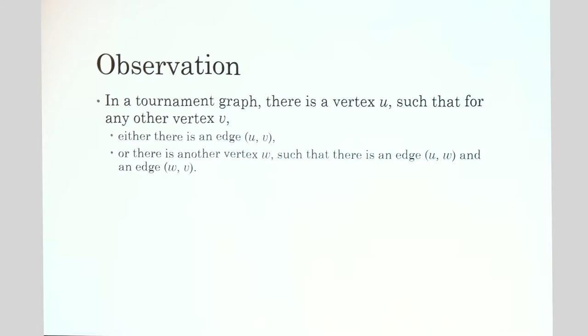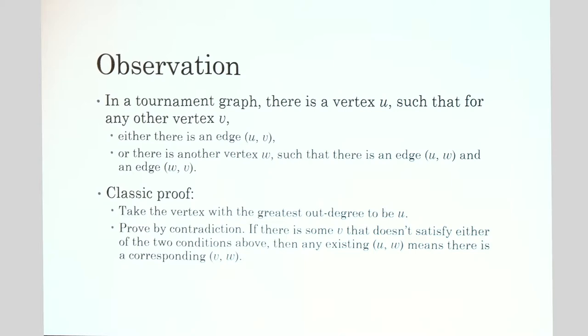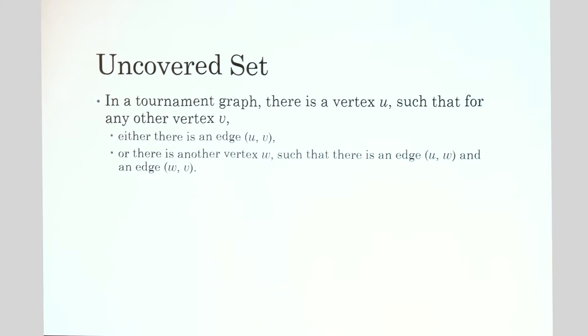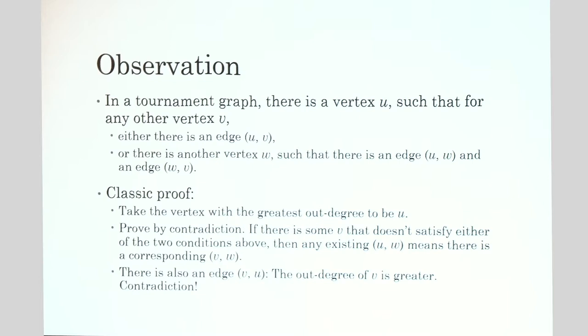A classical proof takes U to be the vertex with the greatest out-degree. We prove by contradiction: suppose there is some V that doesn't satisfy the two conditions. Then for any edge U→W there is also an edge V→W, otherwise there would be a path U→W→V satisfying condition two. So for any out-neighbor W of U, W is also an out-neighbor of V. Additionally there's an edge from V to U because condition one fails. Therefore the out-degree of V is strictly greater than the out-degree of U, contradicting our assumption that U has the largest out-degree.